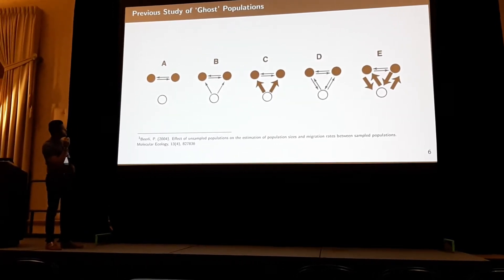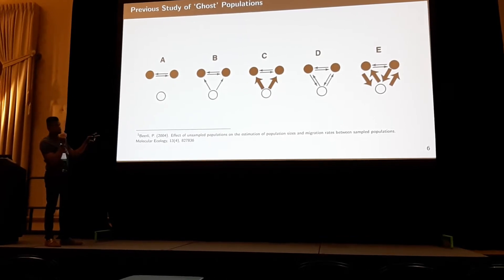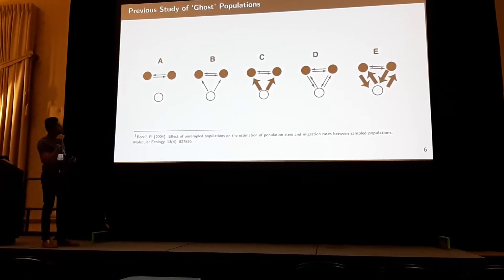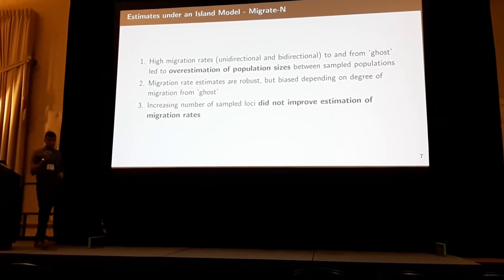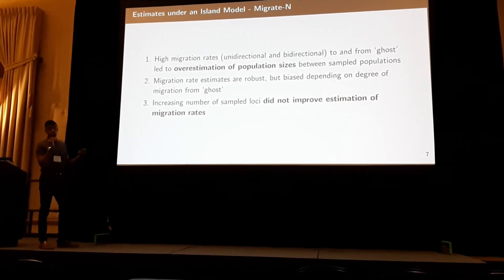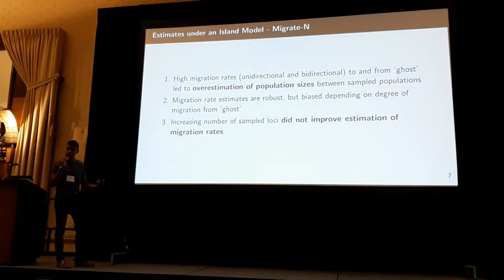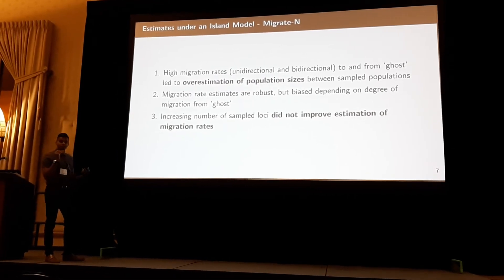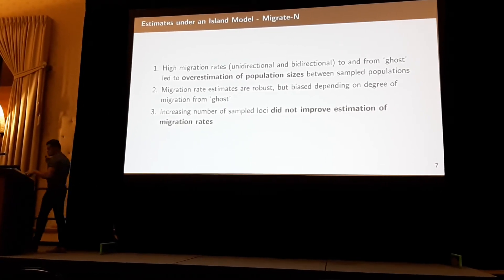In Fairley's case, he simulated a variety of models under island models of migration, varying from no gene flow from an unknown unsampled ghost population all the way up to bidirectional heavy gene flow, to see the net effects on his tool, Migrate. Briefly summarizing his results: with high migration rates, unidirectional or bidirectional, it leads to overestimation of population sizes due to influx of allele variation from unsampled populations. Migration rate estimates seemed robust but biased depending on the degree of gene flow, and increasing sampled loci did not improve migration rate estimation.